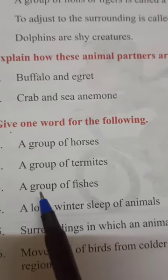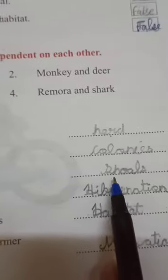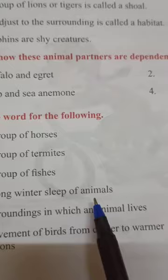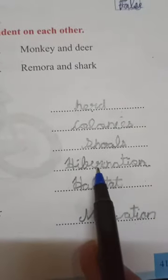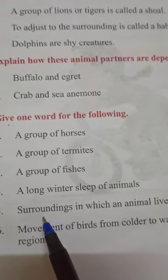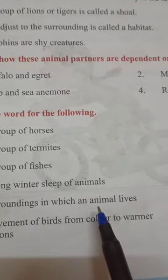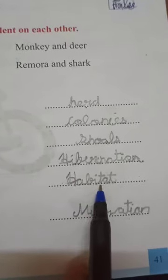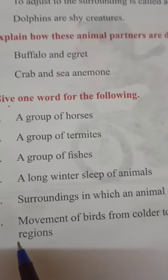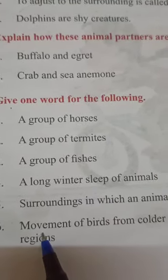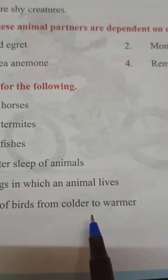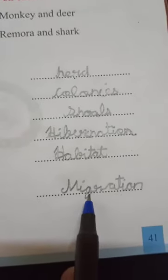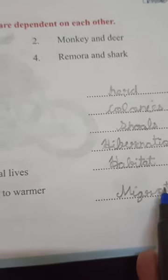A group of fishes is called shoals. A long winter sleep of animals is called hibernation. The surrounding in which an animal lives is called its habitat. The movement of birds from colder to warmer regions is called migration — which we just studied.